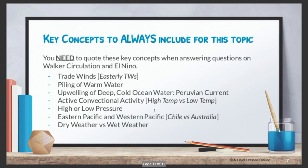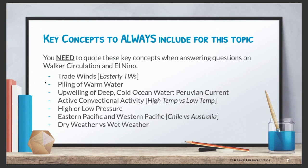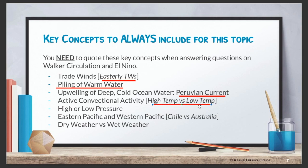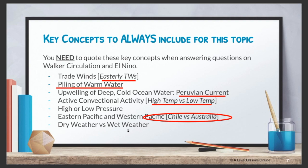The key concepts to include are: first, the trade winds — always mention the easterly trade winds; second, the pooling of warm water on the eastern side, which is Chile or Peru; third, the Peruvian Current shutting down; fourth, convection activity linked to high and low pressure and temperature — referencing eastern versus western Pacific locations; and fifth, dry weather versus wet weather — whether there is flooding or drought.